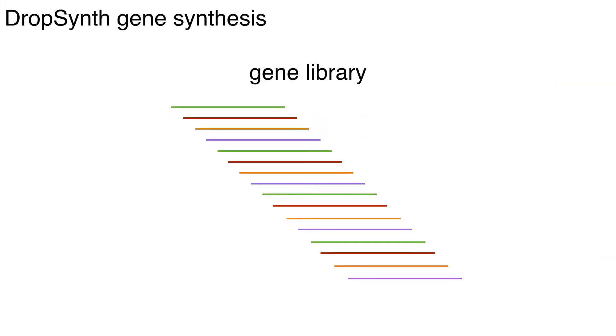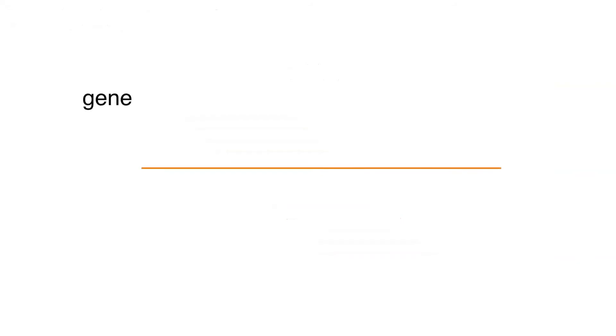And so how does this work? So this is a gene library that we want to design. If we zoom in on one particular gene, we go in, we bioinformatically split each of these genes to have overlapping sequences.